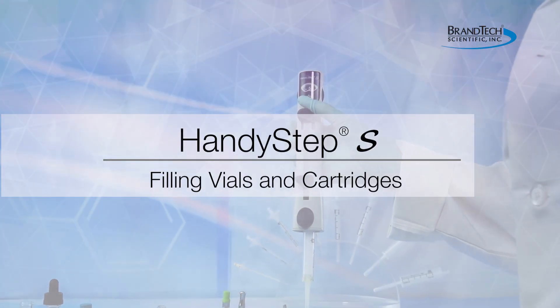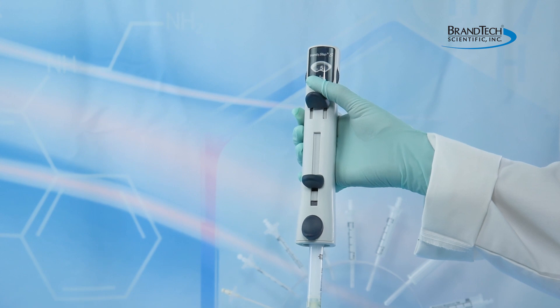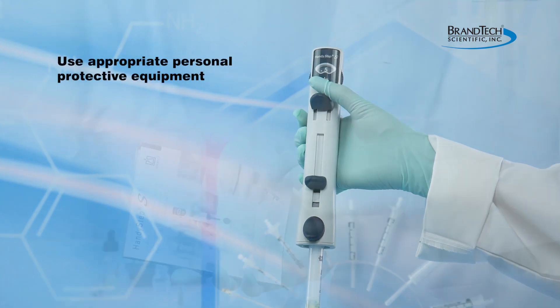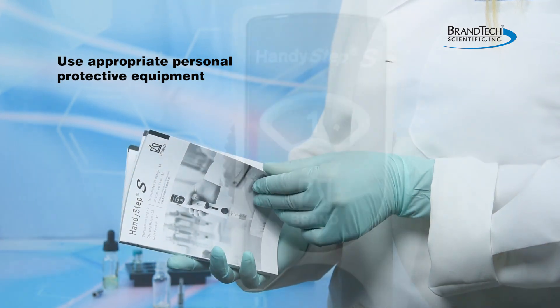This video illustrates the use of the HandyStep S to accurately dispense oils or other viscous liquids into vials and cartridges. This is a general guide and not a substitute for reading and understanding your operating manual.